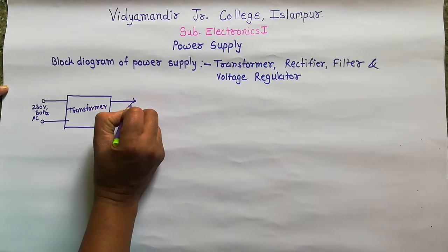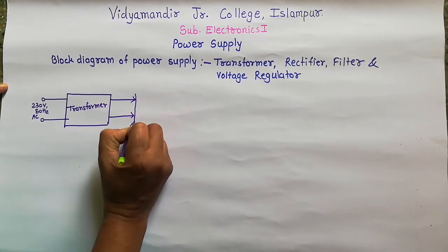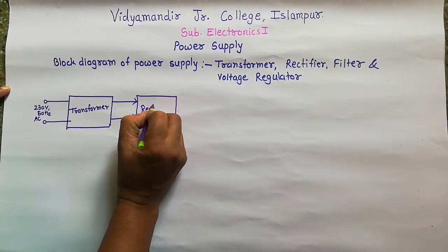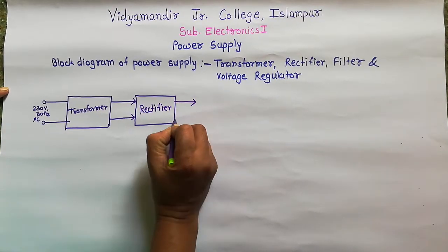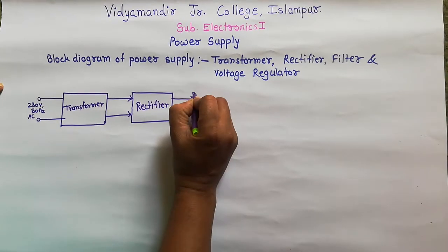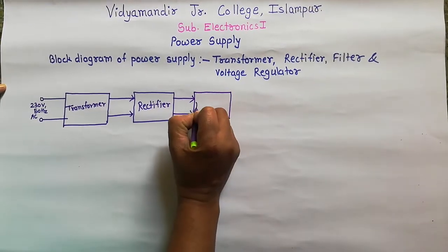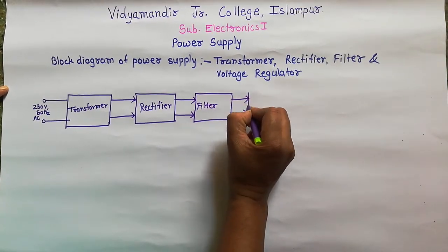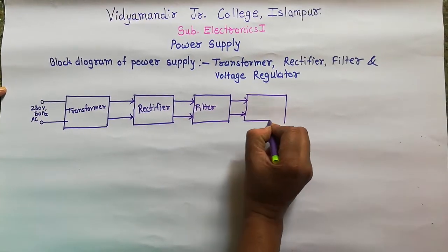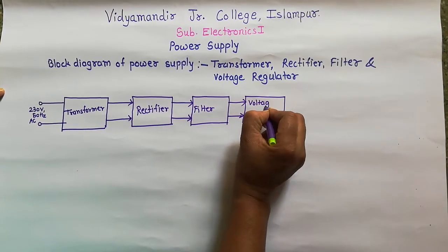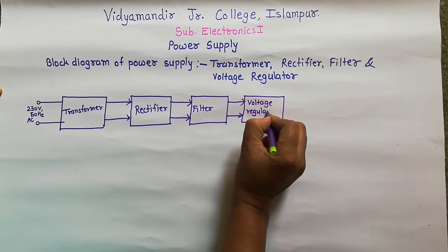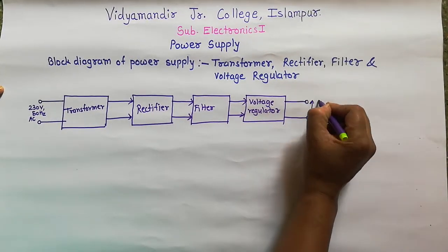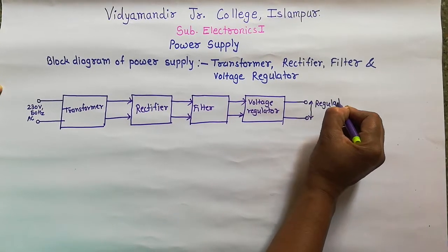The secondary voltage of this transformer is applied to the input of a rectifier circuit. Then the output of this rectifier is applied to the filter, and the output of the filter circuit is applied to the voltage regulator. The output of this voltage regulator is a regulated DC output voltage.